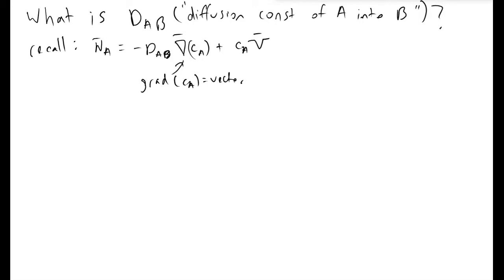From our derivation of a general equation for mass transfer, we saw a quantity called DAB. It stands for the diffusion constant or coefficient of species A into species B.